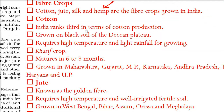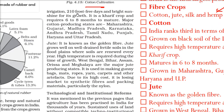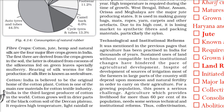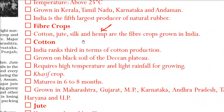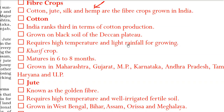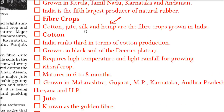Coming to cotton — India ranks third in terms of cotton production globally. Cotton is grown on the black soil of the Deccan plateau. It requires high temperature and light rainfall for growing, and needs 210 frost-free days with bright sunlight. Cotton is a kharif crop and takes 6 to 8 months to mature.